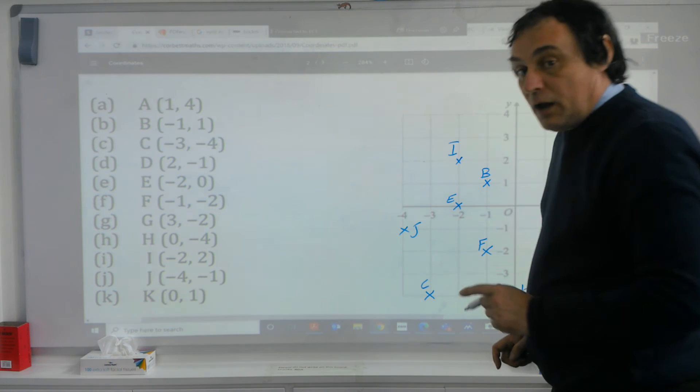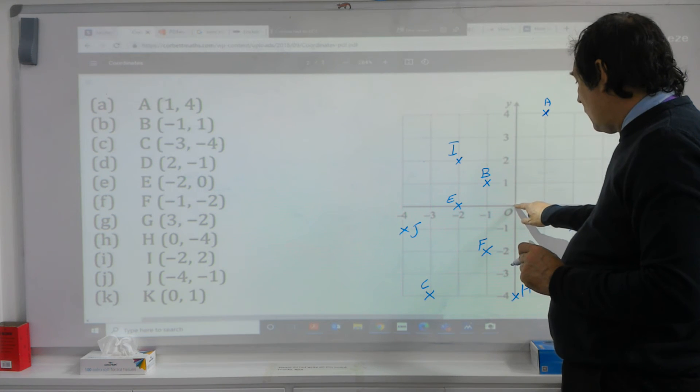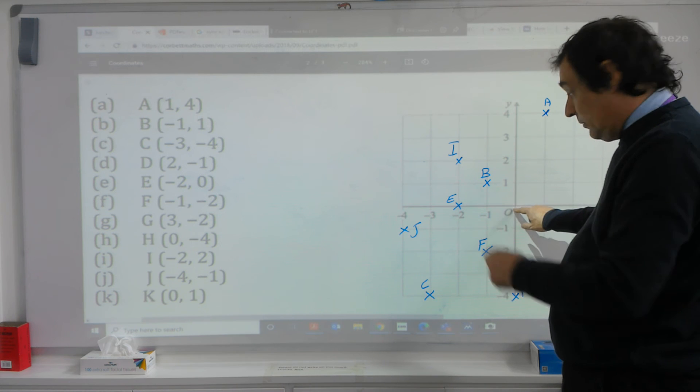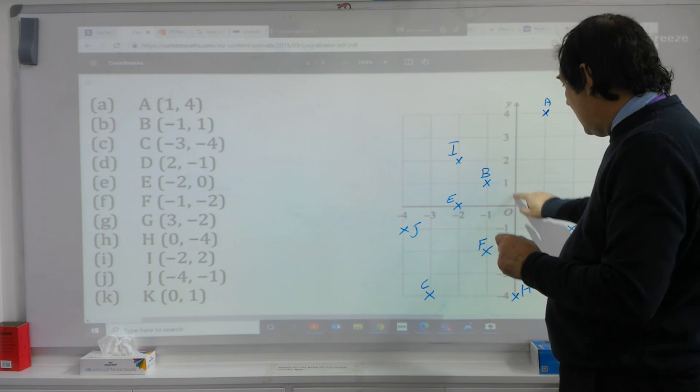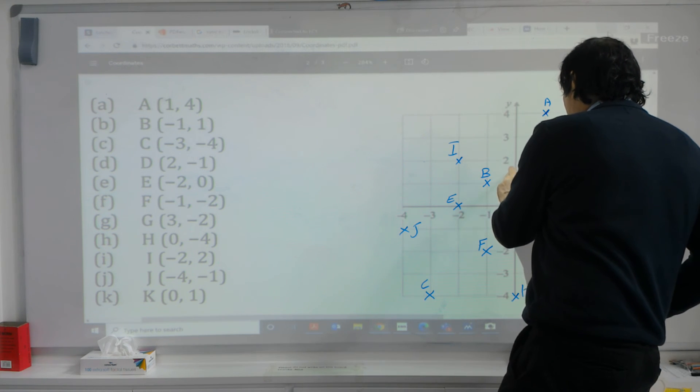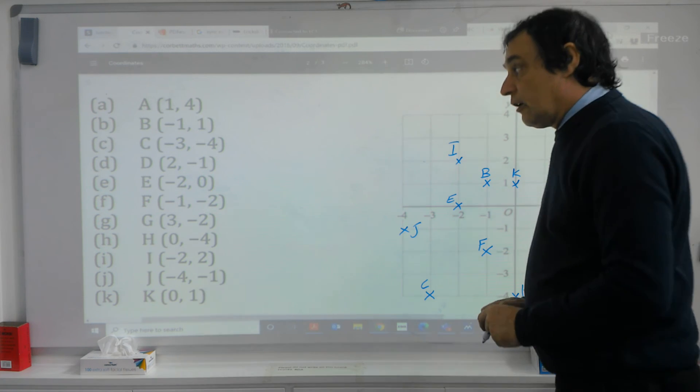And then the final one, K is zero, so zero. We don't go across, because it's a zero, but we go up one to our final coordinate of K.